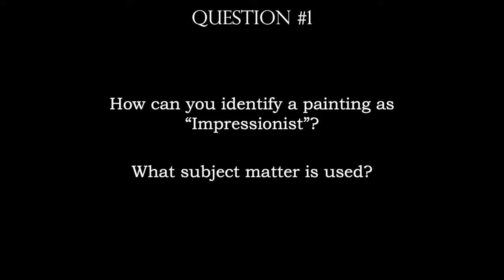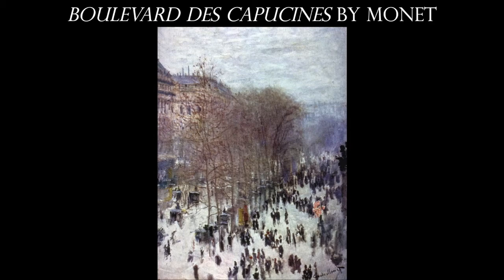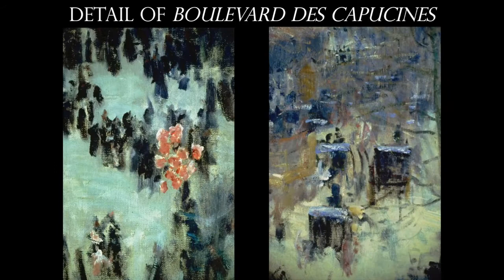To identify a work as Impressionist, we need to know what characterizes the style and its subject matter. Impressionist paintings are characterized by short, quick, visible brush strokes that capture the elements of light. There's a sketch-like quality about these works, and overall they can be described as bright and colorful. When you zoom in, it almost looks like just splotches of color or chicken scratch, but when you zoom out, it makes a coherent image.